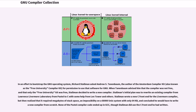In an effort to bootstrap the GNU operating system, Richard Stallman asked Andrew S. Tannenbaum, the author of the Amsterdam Compiler Kit, also known as the Free University Compiler Kit, for permission to use that software for GNU. When Tannenbaum advised him that the compiler was not free, and that only the Free University Kit was free, Stallman decided to write a new compiler. Stallman's initial plan was to rewrite an existing compiler from Lawrence Livermore Laboratory from Pastel to C. He wrote a new C front end for the Livermore compiler, but then realized that it required megabytes of stack space, an impossibility on a 68,000 Unix system with only 64 kilobytes, and concluded he would have to write a new compiler from scratch.